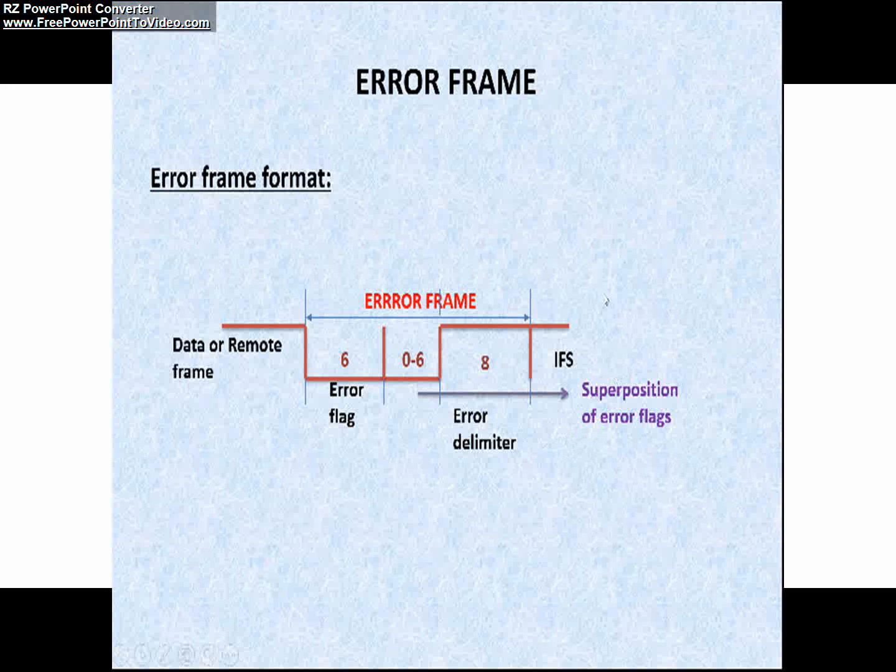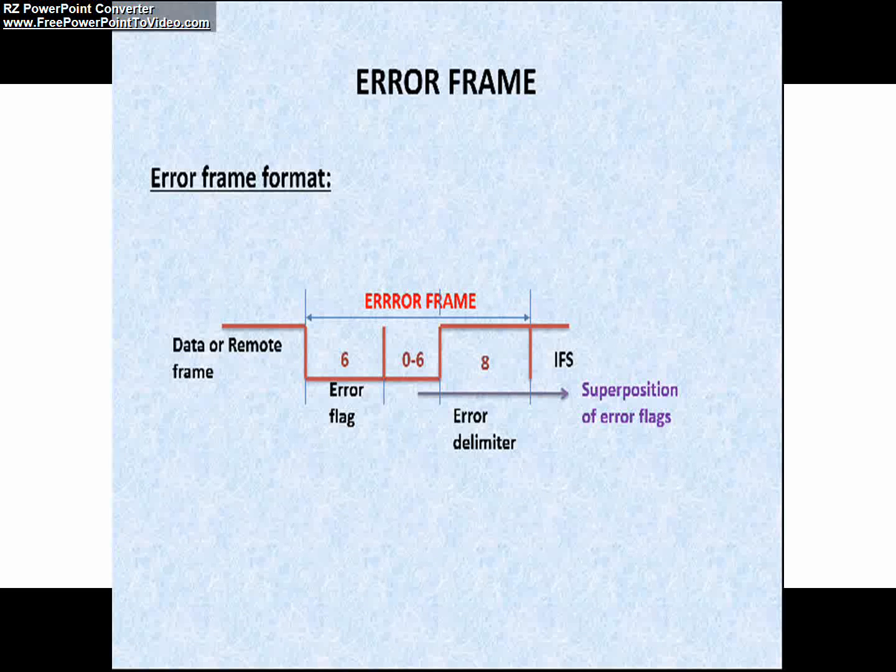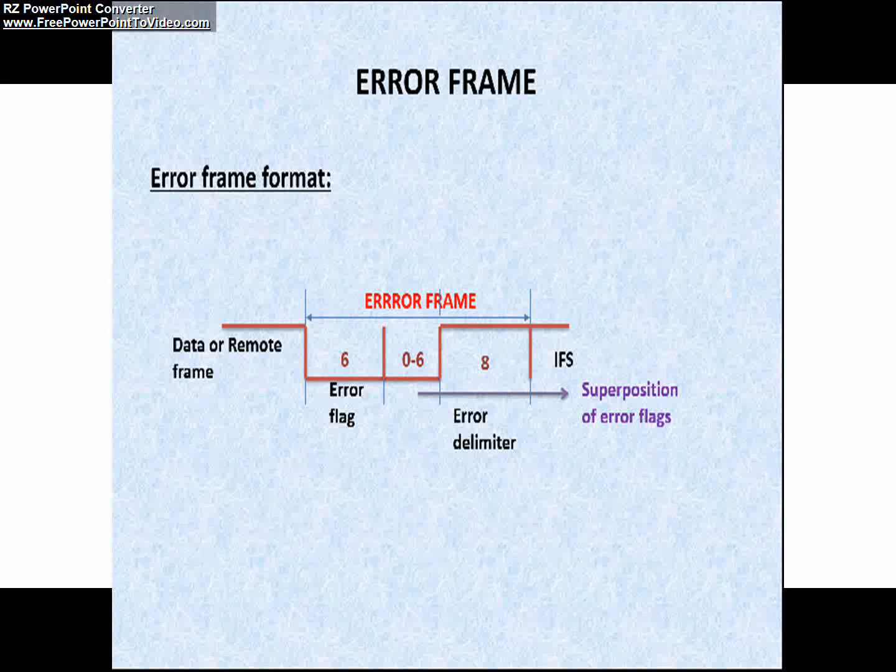What happens here? Now, I am going to tell you when these 0 to 6 bits will be generated. As I said, the error frame violates the bit stuffing rule. Due to this, all stations recognize the resulting bit stuffing errors. As you all know, we already discussed about this in previous videos. And in turn generate error frames themselves. The error flag field therefore consists of 6 bits plus 0 to 6 bits, superposition of error flags.